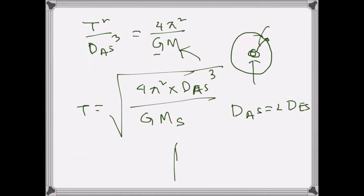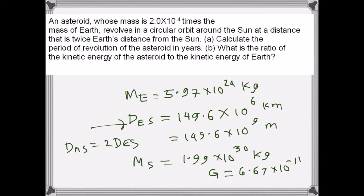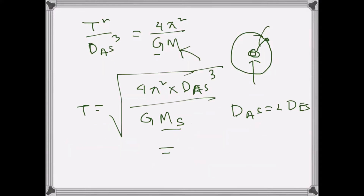Plugging in D_AS = 2 × D_ES and M_sun into the equation, the result in seconds is T = 8.903 × 10⁷ seconds.